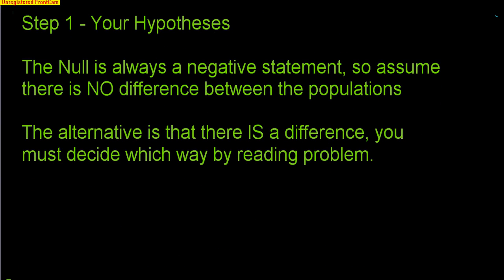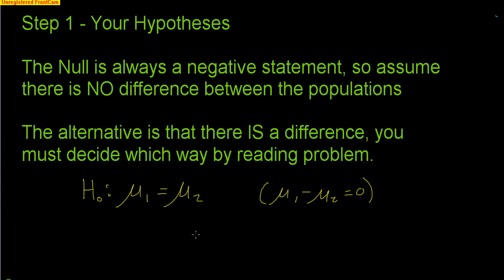There are four steps to run a hypothesis test. Step one is your hypotheses. The null is always a negative statement — we assume there is absolutely no difference between the populations. The alternative is that there is a difference, and you must decide which direction by reading the problem. The null would be that the mean for population one equals the mean for population two, i.e., the difference is zero. The alternative could be greater than, less than, or not equal to — and if it's not equal, you double the p-value at the end.